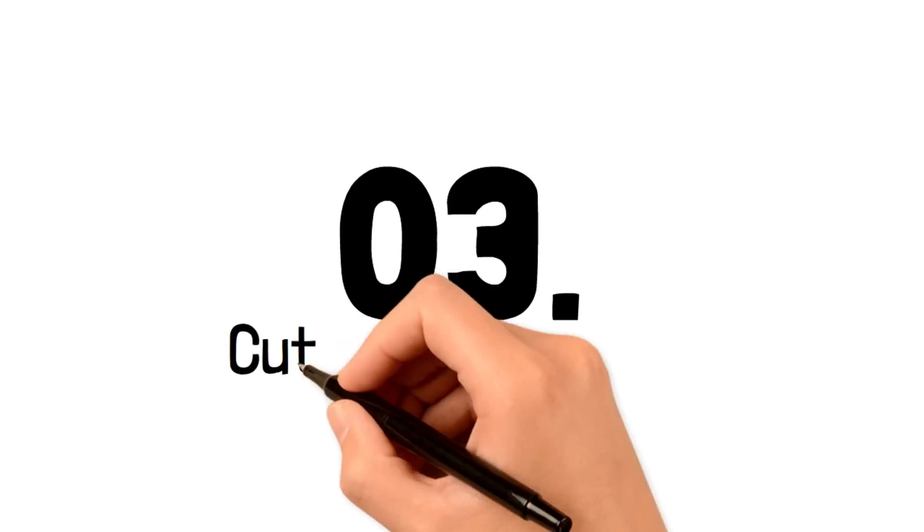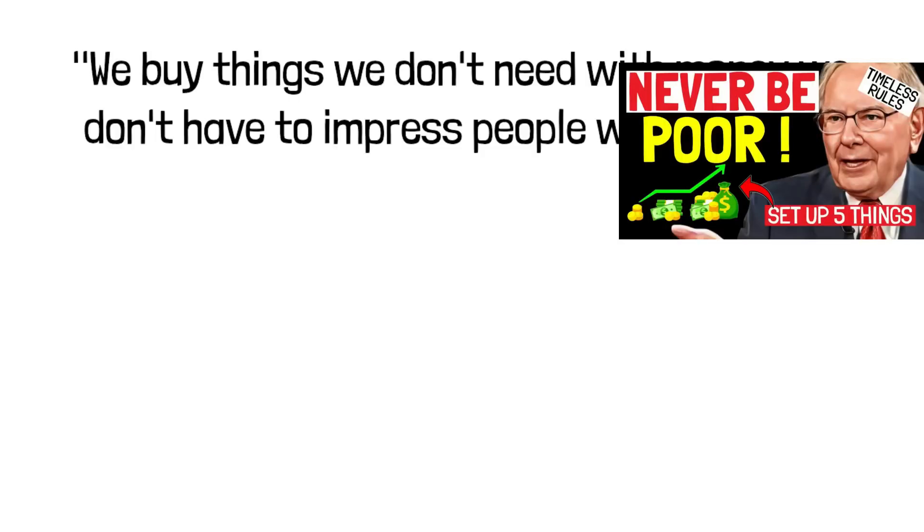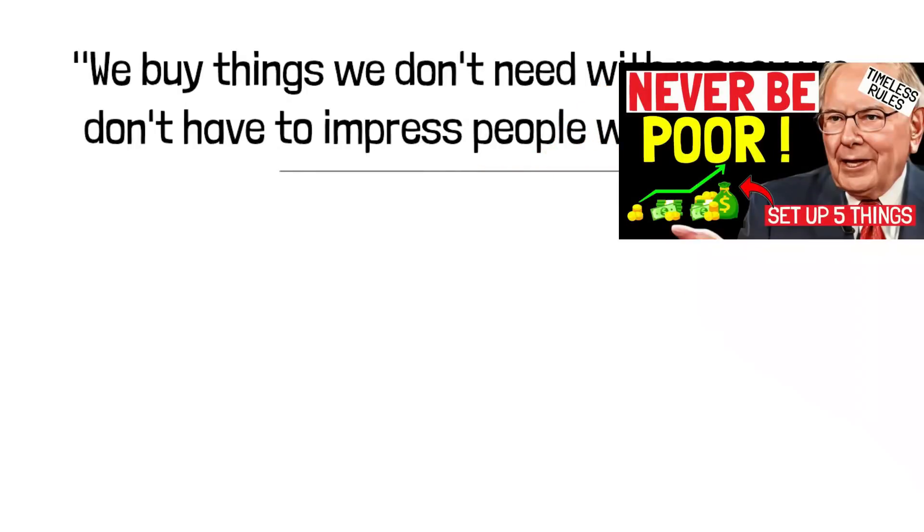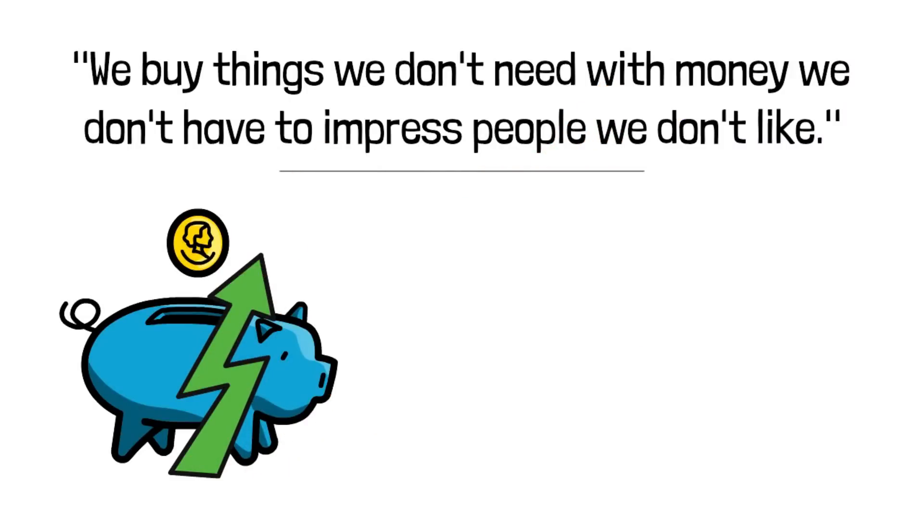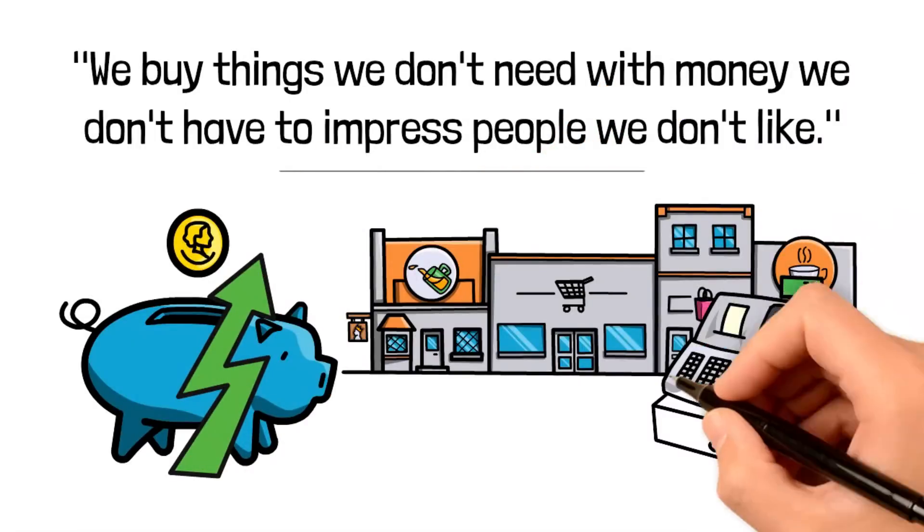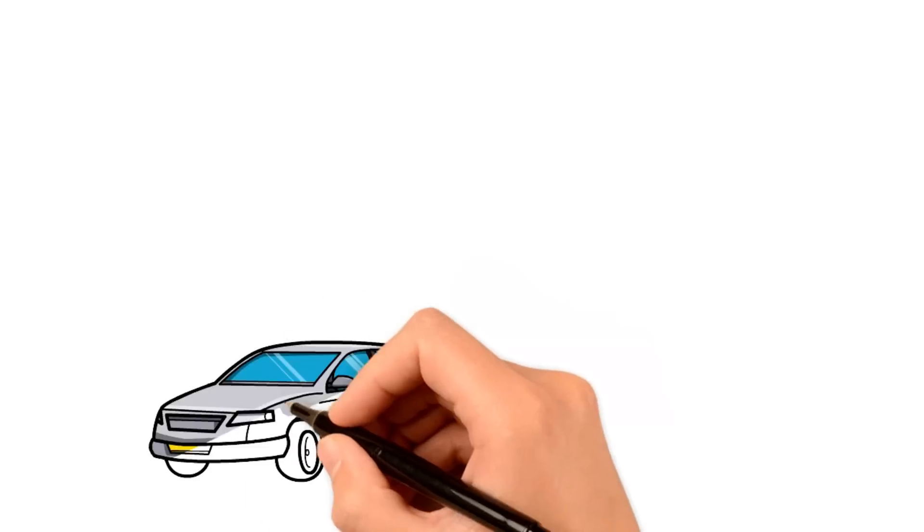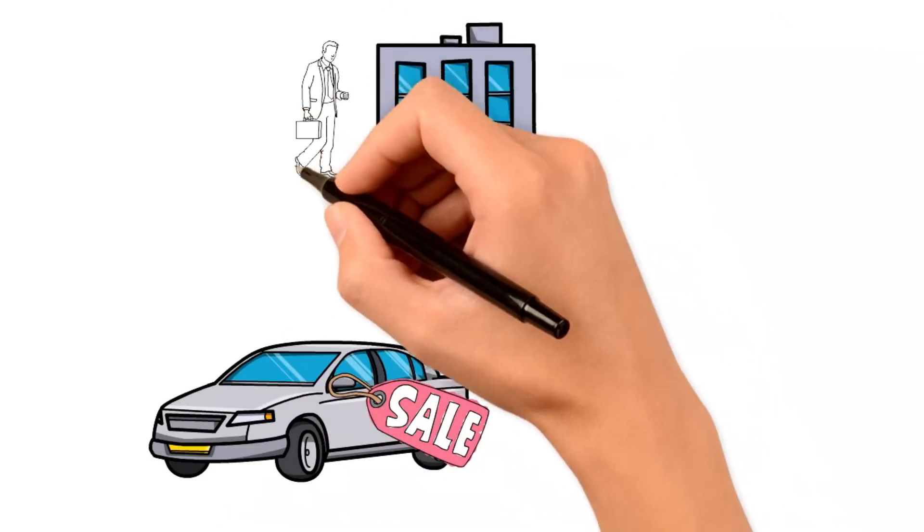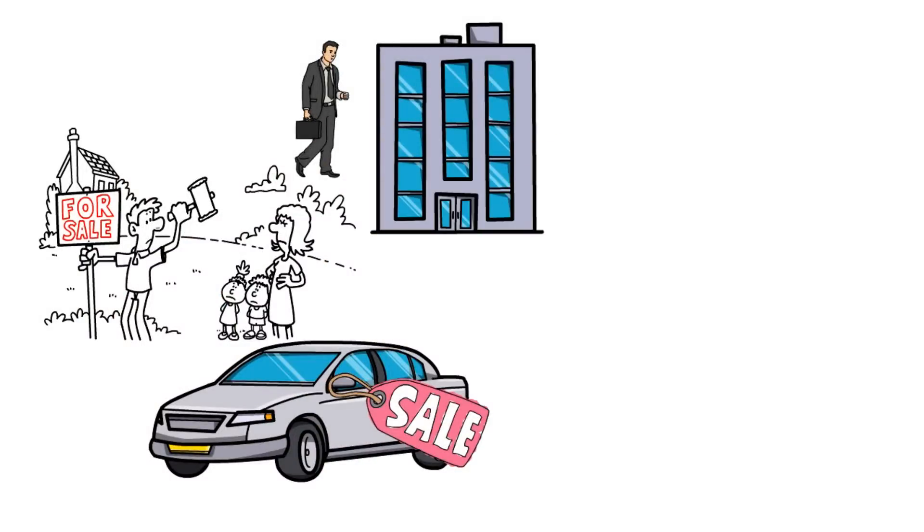3. Cut Back Spending. Dave Ramsey rightly said, We buy things we don't need with money we don't have to impress people we don't like. There's no way to overemphasize this. Every little cent you save counts. So, try to reduce your spending as much as possible. Doing this will be easy if you stop trying to compete with other people. Now, I'm not saying you should sell your car and trek to work or sell your house. I'm simply saying, try to cut off liabilities and preserve only assets.